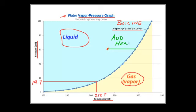Now, for something that isn't so familiar — by looking at the graph, we notice that it is also possible to cause the water to boil without adding any heat at all. That is, by simply lowering its pressure. If we show that process on the graph, the line would look something like this.